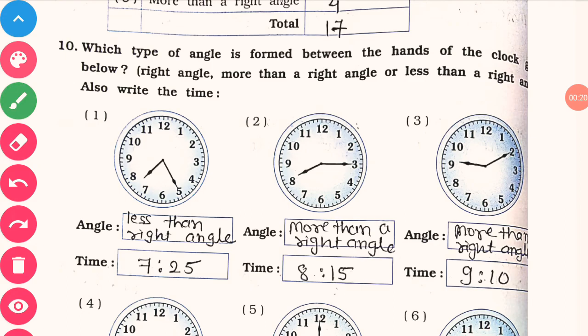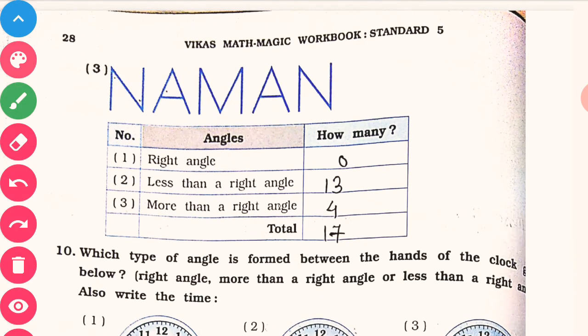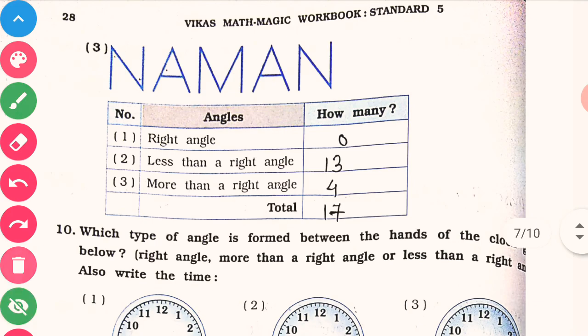Hello students, my name is JP Sir. This video is related to standard 5th subject Maths. Let us revise which topic we completed in our last video. In the last video, I completed up to exercise 9, where we had seen how many right angles, how many less than right angles, and how many more than right angles are there in the letter.